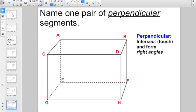Here, we have to name a pair of perpendicular segments. Let's go ahead and find something that's perpendicular. That means they're going to intersect, which means touch, and form right angles.